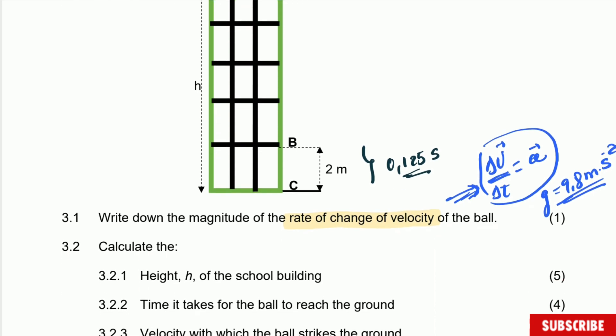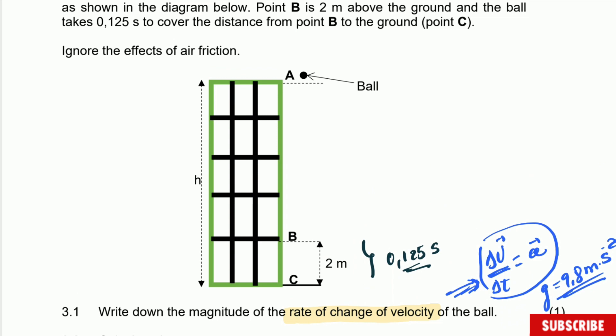Question 3.2 says calculate the height of the school building. This question is a little bit tricky — not that difficult, but tricky because we don't have much information. The only information we have is from B to C. So using B to C, the first thing we are going to do is calculate the velocity of the ball at point B — the magnitude of that velocity at that specific point. We must work as organized as we can.